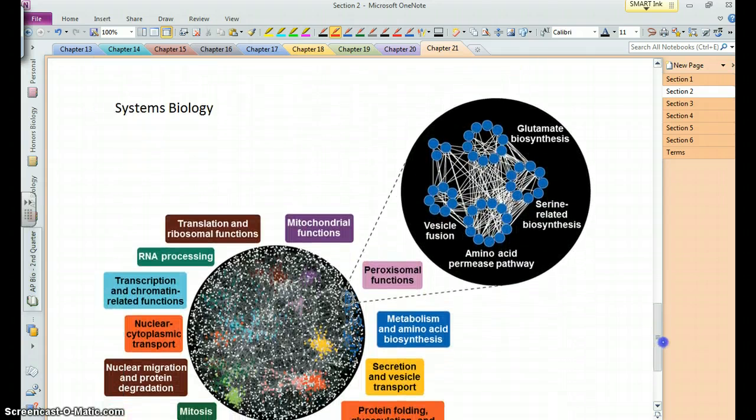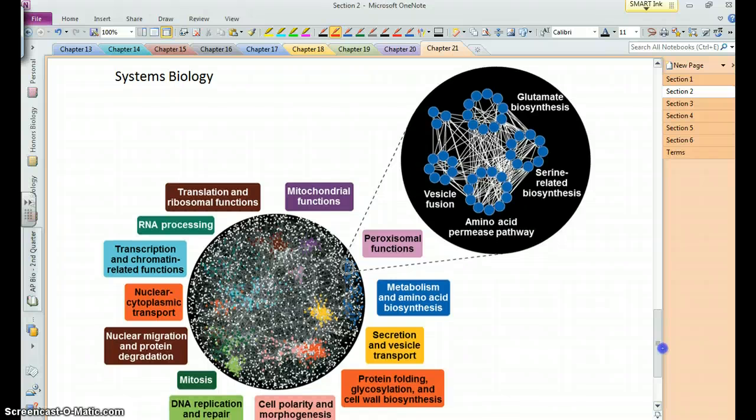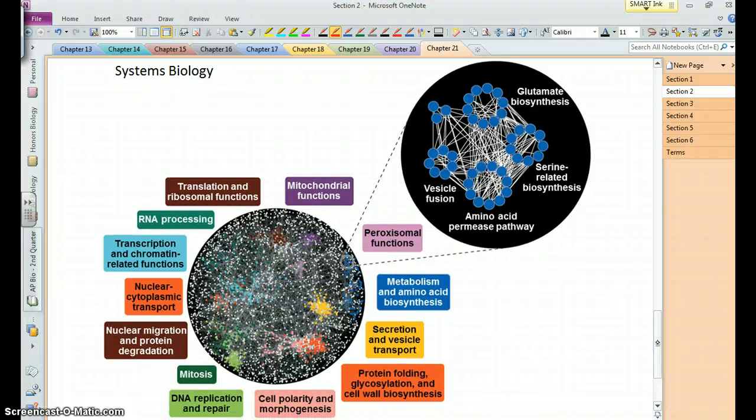This also relates to what in the book they call systems biology, where again you're looking at these different levels of organization within cells and attempting to get a holistic picture of what's going on in them and sort of a complete look at the metabolism for that cell.